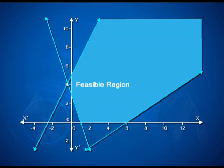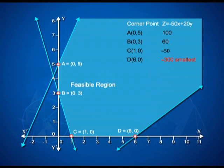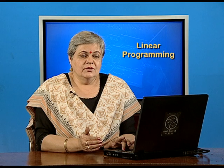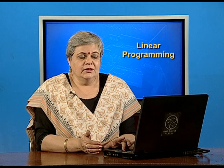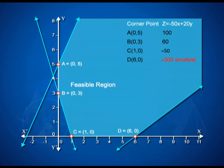The corner points of this unbounded region are four: A = (0, 5), B = (0, 3), C = (1, 0), and D = (6, 0). Applying the corner point method, we evaluate the objective function z = −50x + 20y at these points. At A, z = 100; at B, z = 60; at C, z = −50; at D, z = −300. We wanted to minimize z, so it appears that −300 is the smallest value. But is this actually the optimal solution?